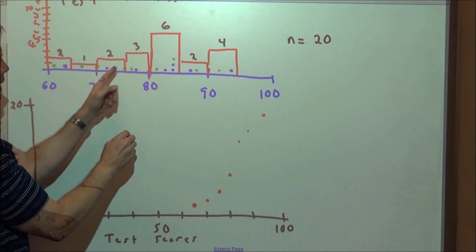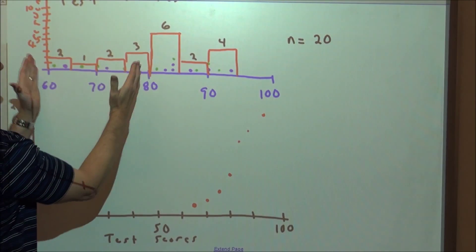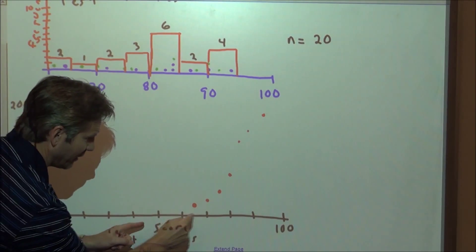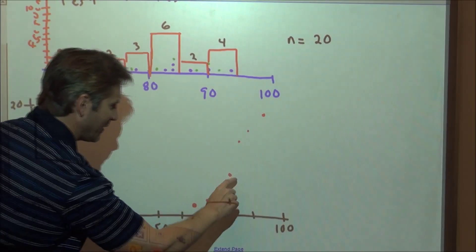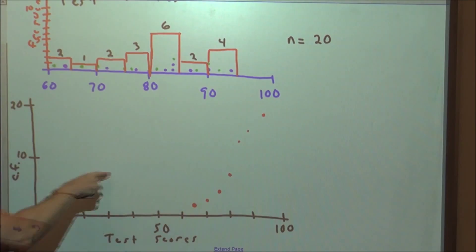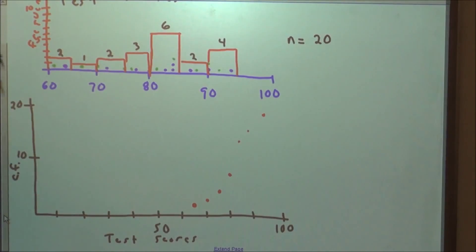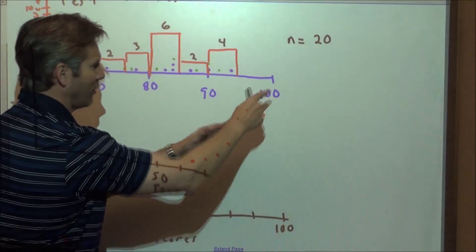By the time we get to 75, we have two more scores. So at 75, we're up to five scores. So we have an ongoing cumulative frequency of how many scores that we're seeing. So these dots just keep getting higher and higher. By the time we get to 80, we have three more scores. So we have eight scores by the time we get to 80.